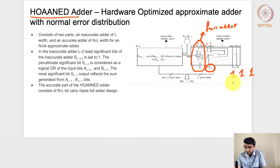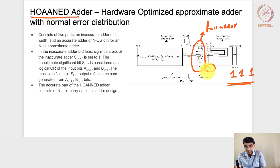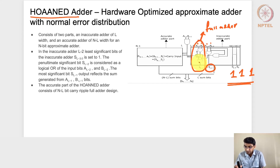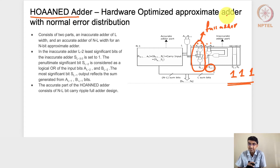In OLOCA, there was no carry out propagated from the inaccurate to the accurate portion — only OR gates were used at the most significant bit of the inaccurate part. HOANED uses a full adder there, so more hardware is involved compared to OLOCA. We still expect approximate results since some bits in the inaccurate portion are treated as one, but results should be closer to exact. The power, area, and delay of HOANED will be slightly higher than OLOCA.